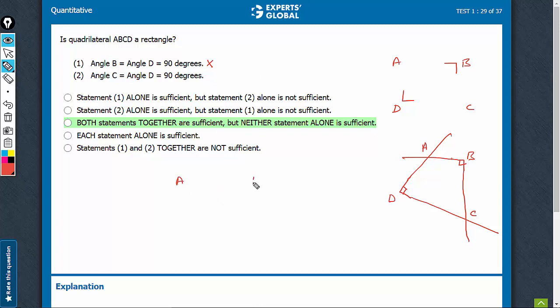Similarly, in this case, it says angle C is 90, angle D is 90. So, these two angles are 90, but it may be a rectangle or if I extend one of these, now it will not be a rectangle. So, not sufficient.